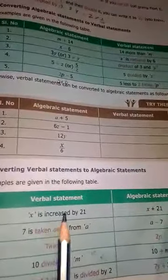Next, converting verbal statements to algebraic statements. Variables are given, and you write the algebraic statement in short form. 'x is increased by 21' - increasing means plus, so x plus 21. Next, '7 is taken away from a' - taken away means subtraction, so a minus 7.